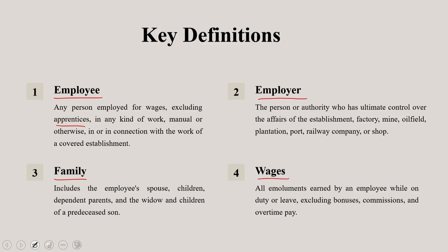The fourth element is wages. Wages mean all emoluments earned by an employee while on duty or on leave, in accordance with the terms and conditions of employment, which are paid or payable in cash, and include elements like DA and DNS, but do not include any bonus, commission, HRA, overtime wages, or any other such allowances.